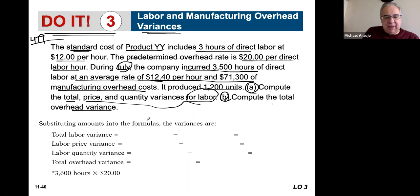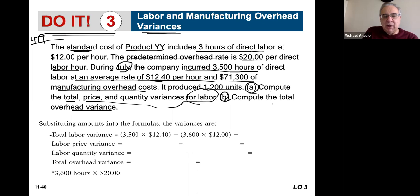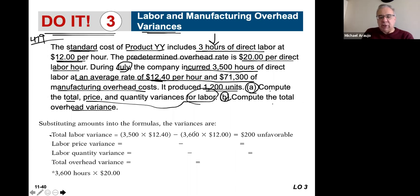We're going to substitute the amounts into the formula. Total labor variance: actual hours times actual rate, take away standard hours at the standard rate. Standard is three hours of direct labor times 1,200 units, at $12 per hour as your standard cost. When you take the differences, you'll see a $200 difference and it's unfavorable.